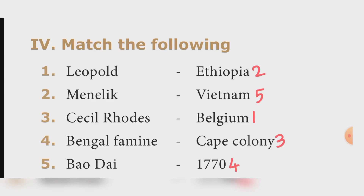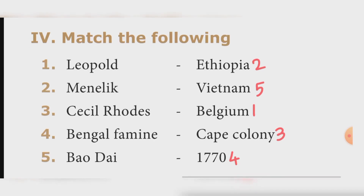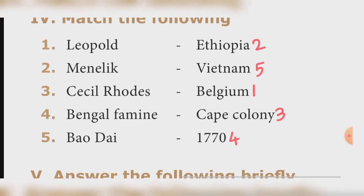Fourth section: Match the following. Leopold — Belgium. Menelik — Ethiopia. Cecil Rhodes — Cape Colony. Bengal Famine — 1770. Baidoy — Vietnam.